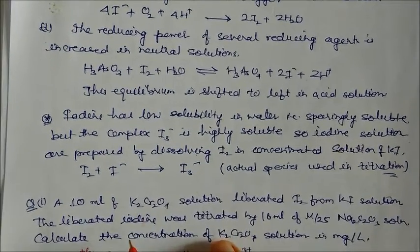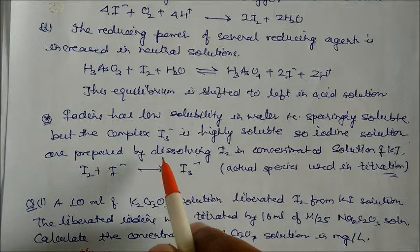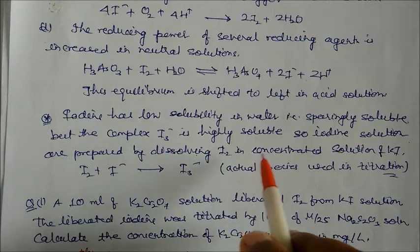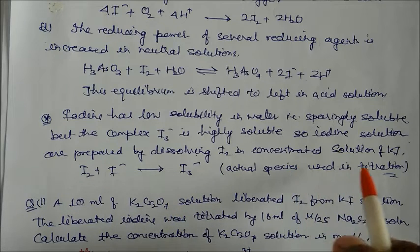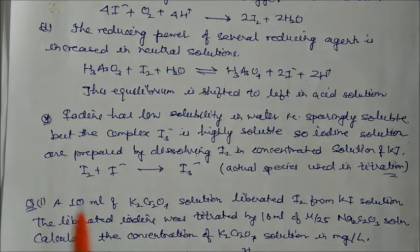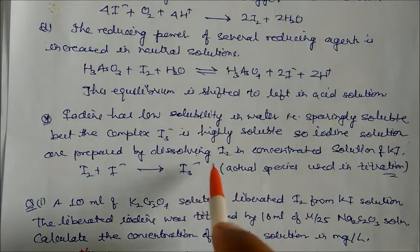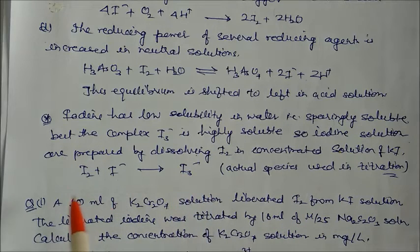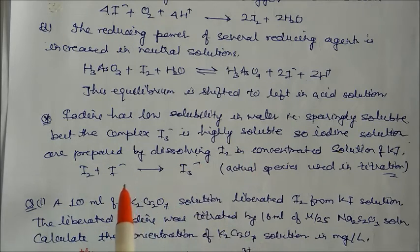Iodine has low solubility in water — it is sparingly soluble — but I₃⁻ is highly soluble. So iodine solutions are prepared by dissolving iodine in a concentrated potassium iodide solution: I₂ + I⁻ → I₃⁻. This I₃⁻ complex is the actual species used in the titration; we cannot use I₂ directly.